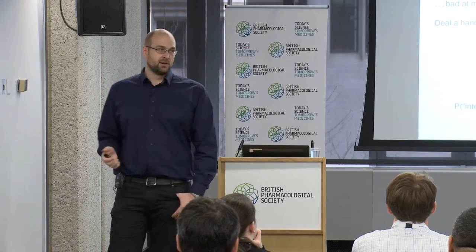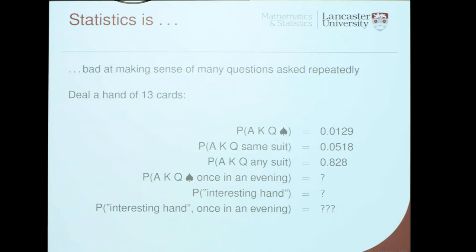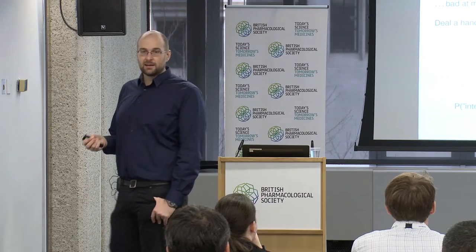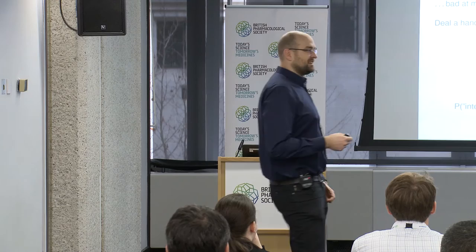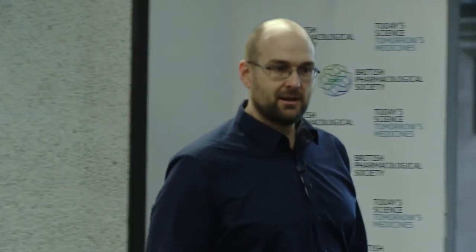Statistics is rather bad at answering many questions or answering vague questions. Suppose we're playing cards and I'm asking: what's the probability of observing an ace, king, queen of clubs? I can work that out — it's about 1.2%. Of any suit, about 5%. But if I'm playing, I'm probably much more interested in what's the probability of having a useful hand, an interesting hand. The question is so ill-posed that statistics is not helpful in answering it.